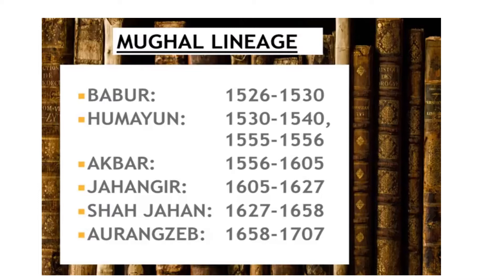Then Shah Jahan came; he ruled from 1627 to 1658. After that Aurangzeb came; he ruled from 1658 to 1707. After this there were many other rulers who ruled in India.